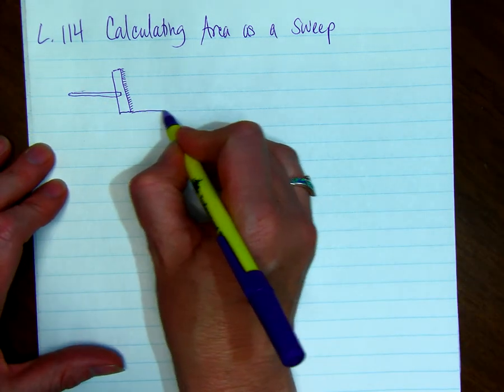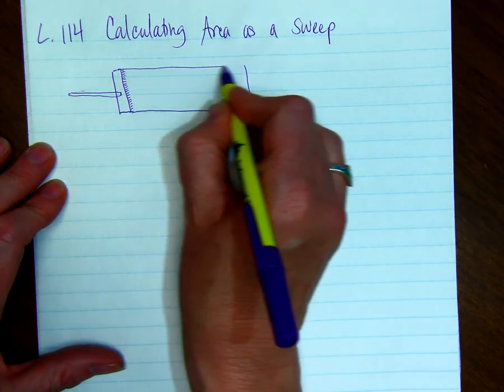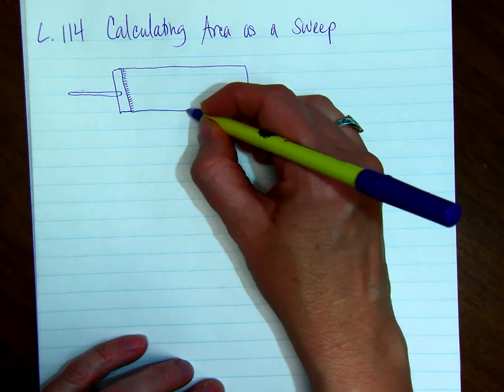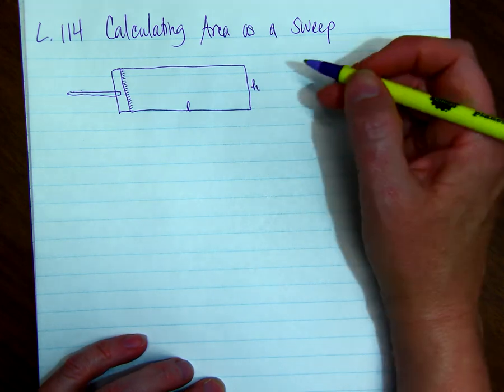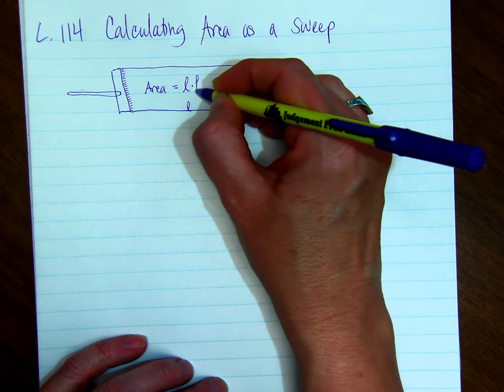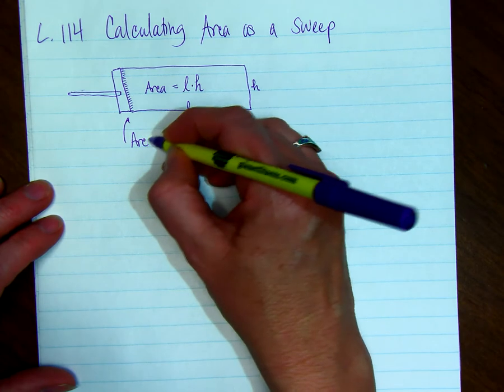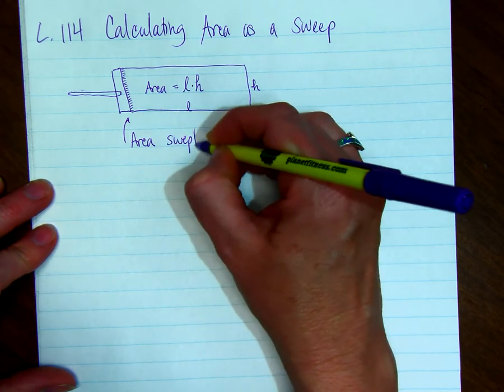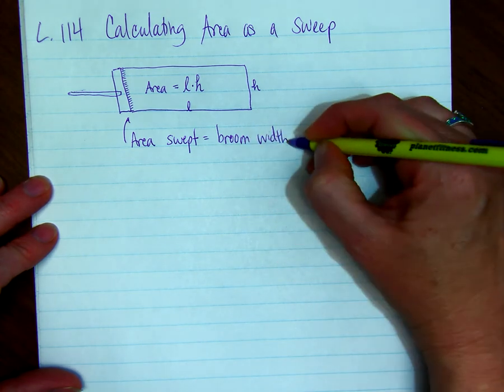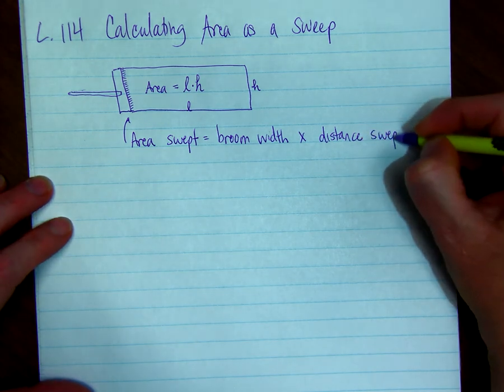If we wanted to find the area of a rectangle, if you imagine the broom sweeping all the way across, the area that it covers is the length times the height of the broom. Area equals length times height. Alright, so this is the area swept equals the broom width times the distance that it was actually swept.